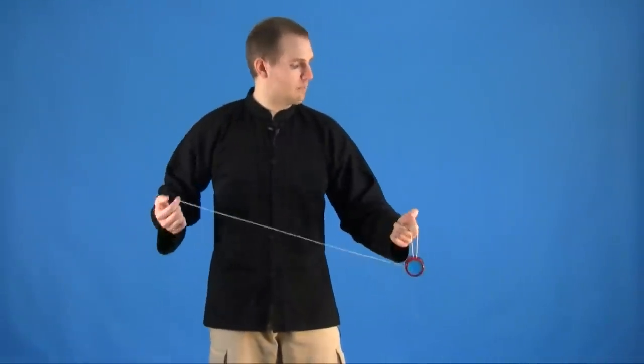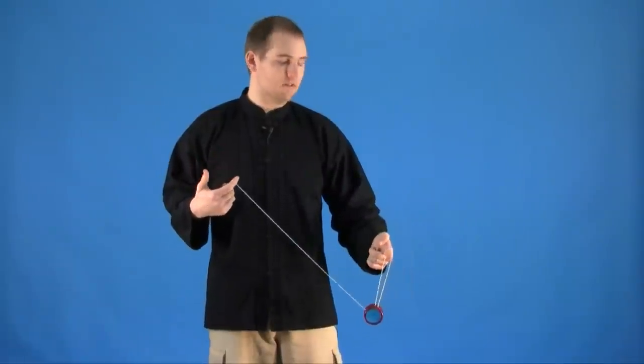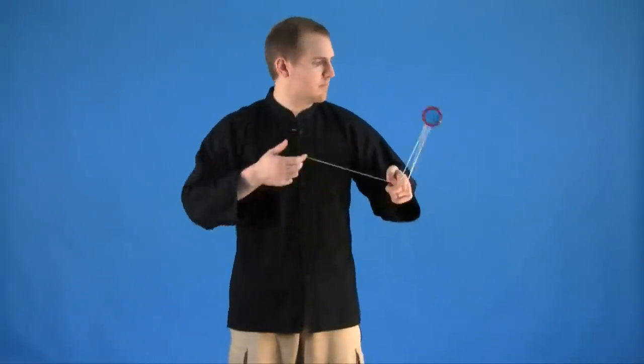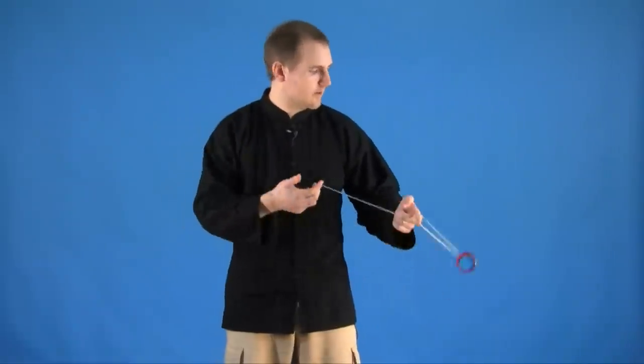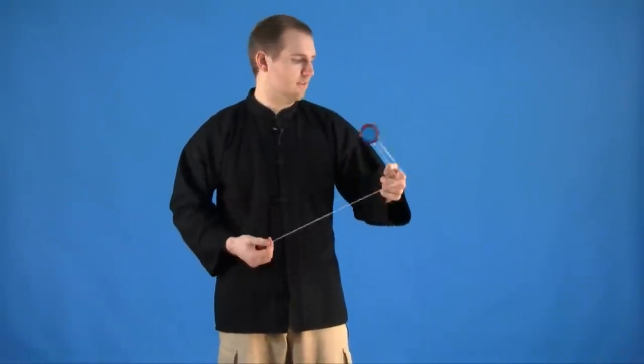From there, we're going to go back over your opposite hand like we're going to do a double trapeze, but this time miss in front, swing again, land on the string, then unwind it and bring it back to your hand.